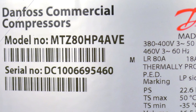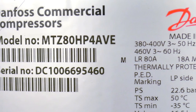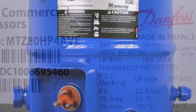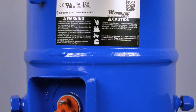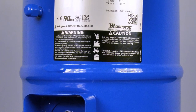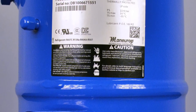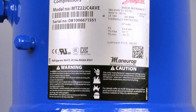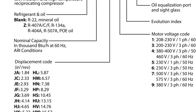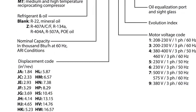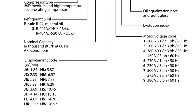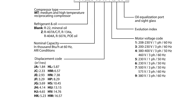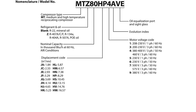Despite often looking like random letters and numbers, model numbers contain a lot of information about a particular product. To help the model number or nomenclature make better sense, this video will explain the nomenclature for the MT-MTZ series of Danfoss compressors. Nomenclature is used to describe the features that each compressor offers, signified by a letter or number and by its location in the nomenclature.